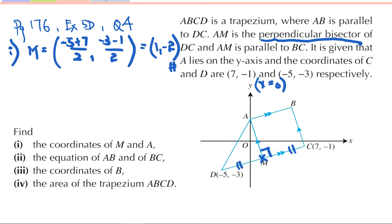What do I discover in point A? A lies on the y-axis, and AM is perpendicular to DC. Since A lies on the y-axis, the coordinates must look like (0, y). The gradient of AM and the gradient of DC, when they multiply together, must be equal to negative 1 because of the fact that the two lines are perpendicular.